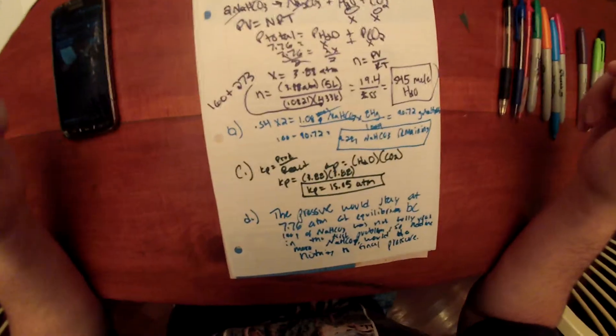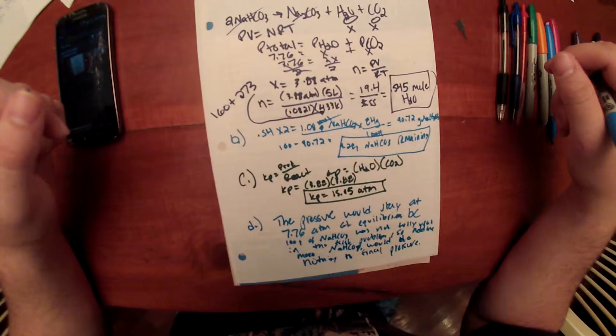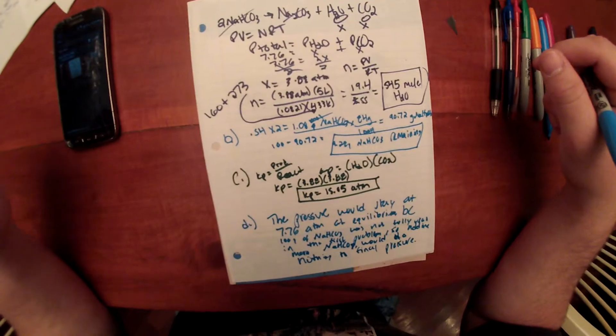And there you have our College Board AP Chemistry Free Response, year 1992, question 1, A, B, C, and D.